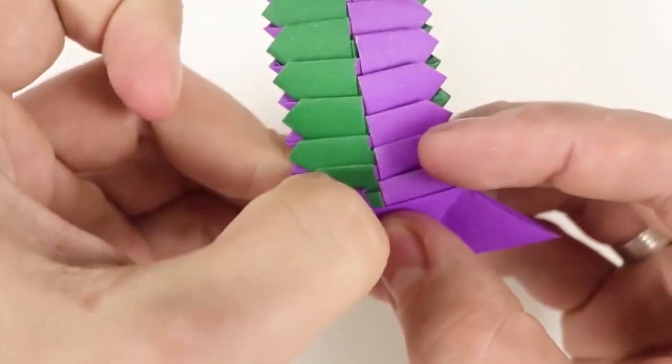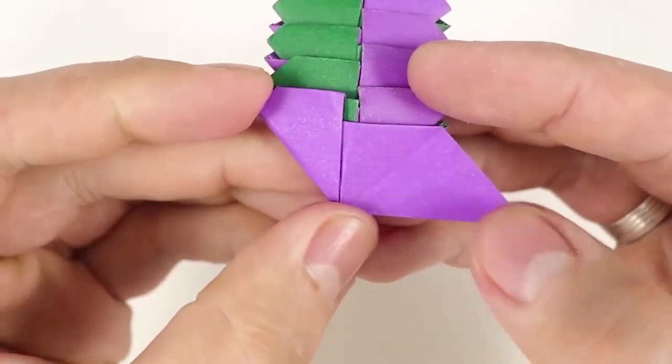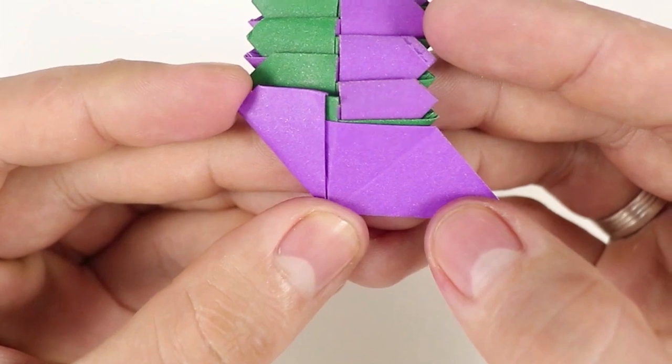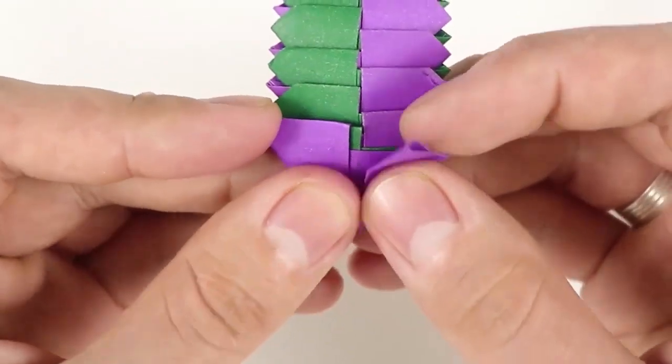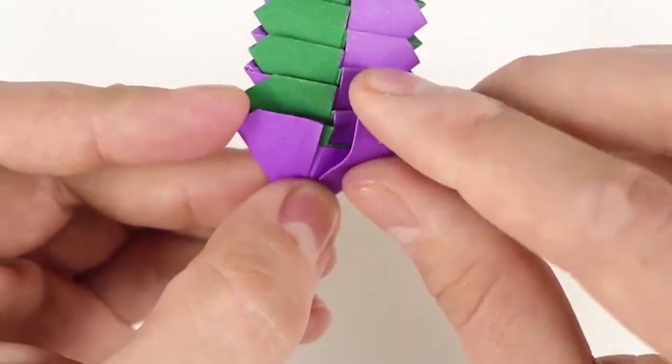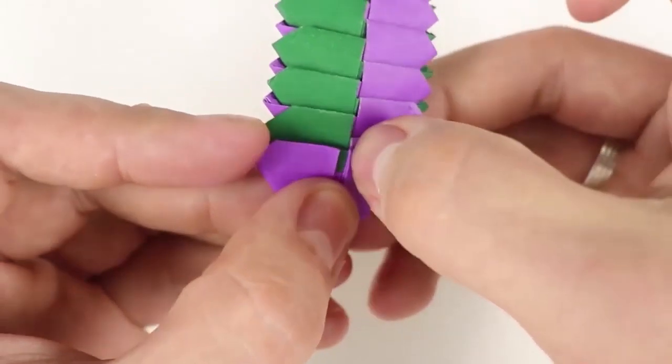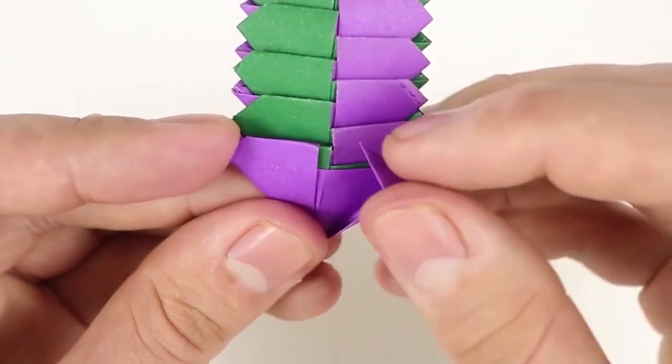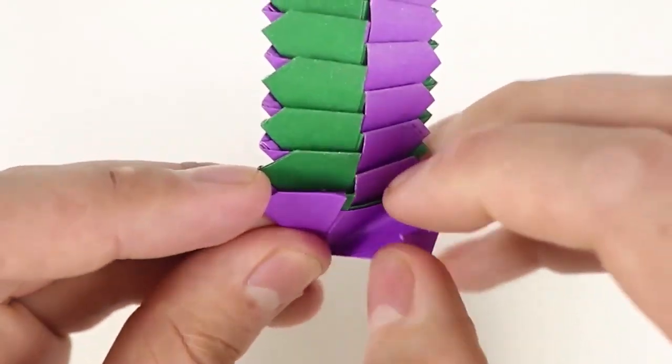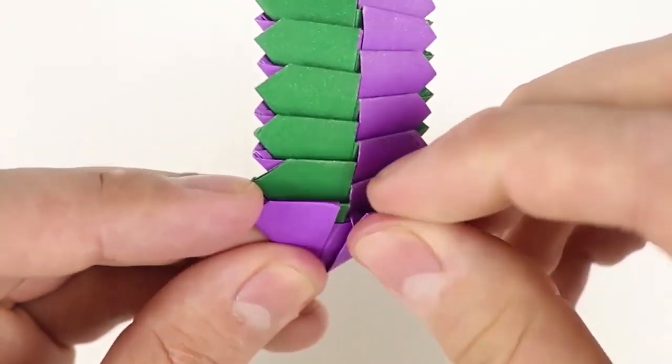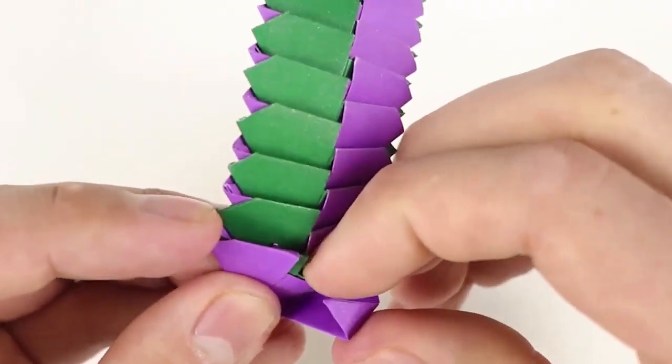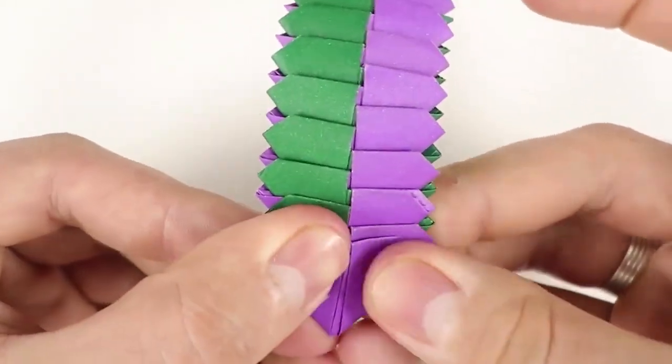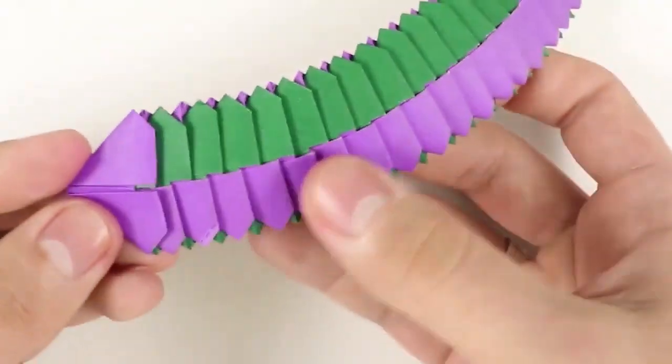Now the other side is made differently, we also need to fold the same height, but now fitting in this edge here, in the previous piece. To do this, we compare the two, we fold at the same height, and then we fit into that piece that I showed. We have a lock, so the piece will stick together without glue.